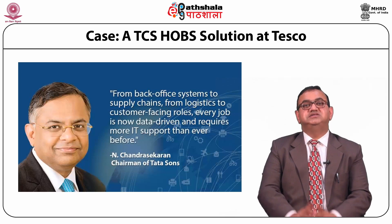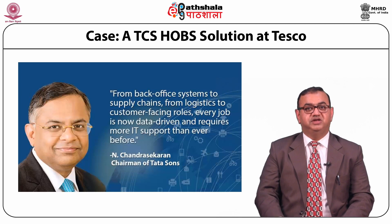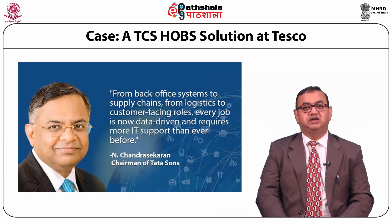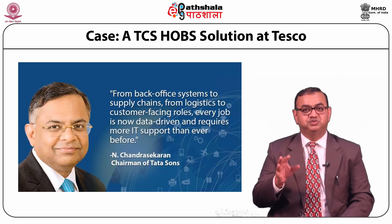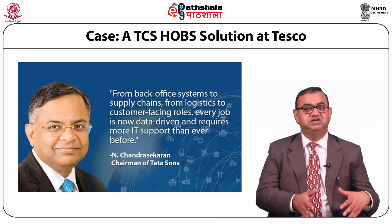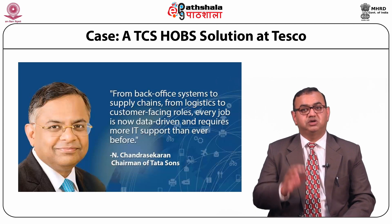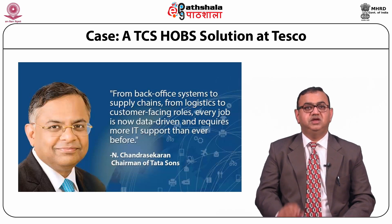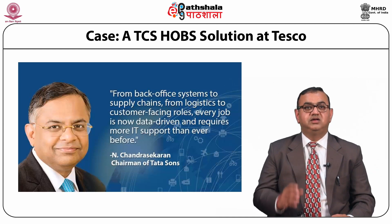Tesco's UK stores are divided into six formats differentiated by size and range of products sold. Tesco Extra stores are large, mainly out-of-town supermarkets stocking nearly all of Tesco's product range. Tesco supermarkets are standard large supermarkets stocking groceries and a smaller range of non-food goods. Tesco Metro stores are sized between supermarkets and Express stores, mainly in city centers and high streets. Tesco Express stores are neighborhood convenience stores. In addition, Tesco has a banking arm, operates as an ISP, and offers mobile phones, home phones and VoIP businesses.